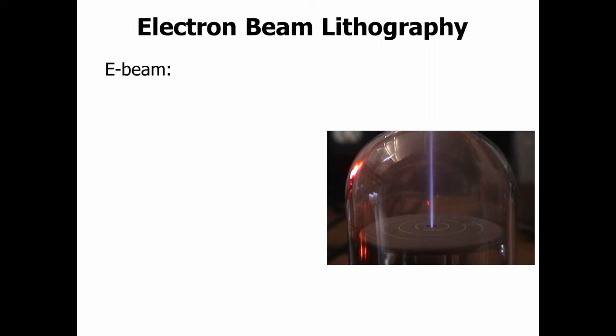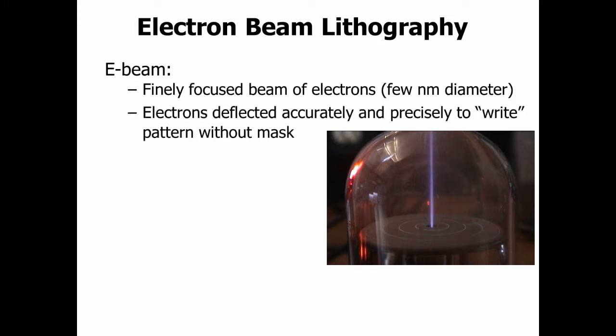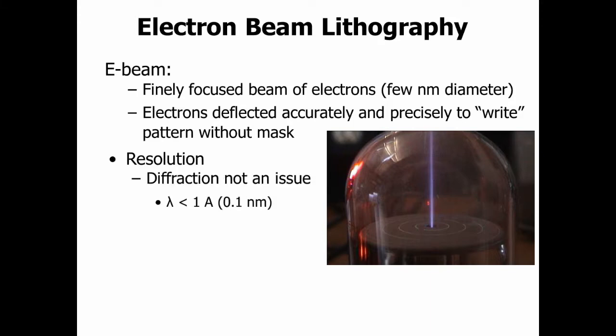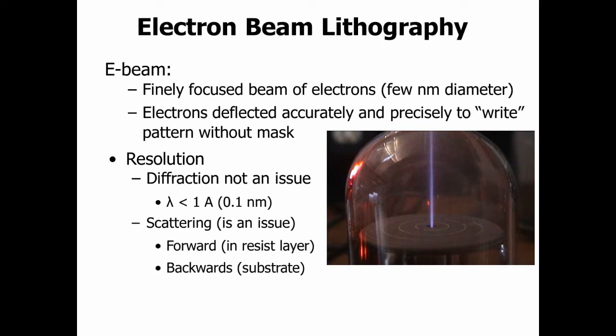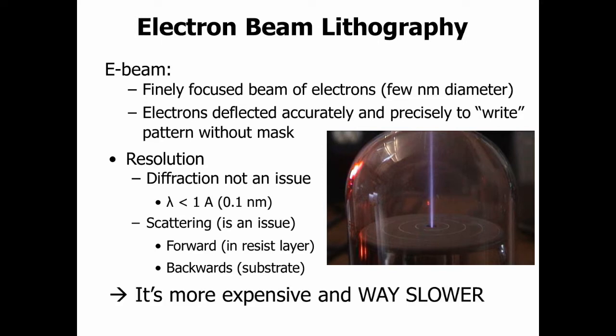Electron beam lithography is a bit different. You focus a beam of electrons and write your pattern directly — there's no mask; you literally write the pattern into your substrate. Diffraction is not an issue here because we're working with electrons, not UV light, so the wavelength of electrons is much smaller. Scattering is, however, an issue. Electrons can scatter within the resist layer or within the substrate. Electron beam lithography is also more expensive and way, way slower, because the electron beam creates such a small pattern and you have to move slowly.